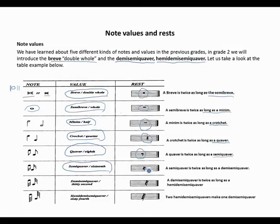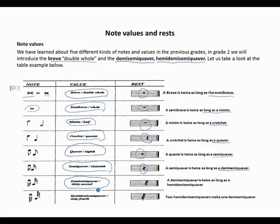The semi-quaver has two flags or two lines, then one straight line going down, similar to the quaver rest. A semi-quaver is twice as long as a demi-semi-quaver. The demi-semi-quaver is also known as a 32nd note and is half of a semi-quaver. We add another line, so it now has three lines or three flags.